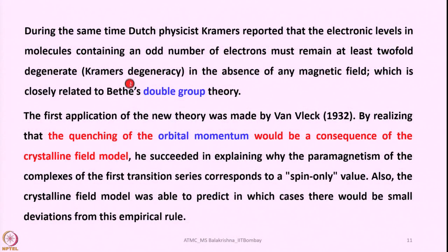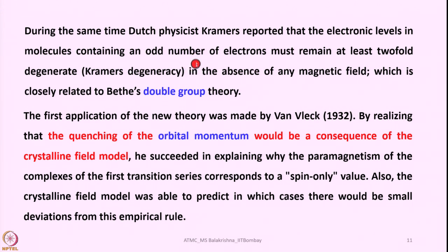During the same time, Dutch physicist Kramers reported that electronic levels in molecules containing an odd number of electrons must remain at least twofold degenerate — this is called Kramers' degeneracy rule — in the absence of any magnetic field, which is closely related to Bethe's double group theory. Bethe stated that the degeneracy of gaseous metal ions will not remain intact when they enter a crystal field; it is destroyed and forms two groups, which is Bethe's double group theory.